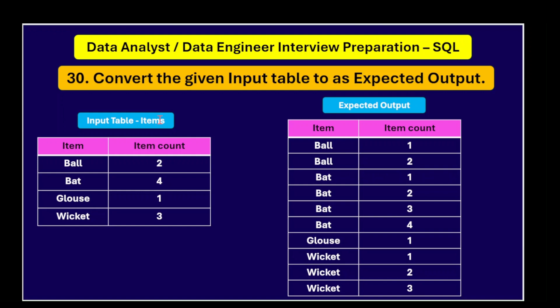In each item we have different types of items like ball, bag, gloves, and wickets. In the second column, this is a count of items — how many there are. Balls are two, bat are four, gloves are one, wickets are three. We need to convert this table into a format like ball one and ball two, then bat one, two, three, four. Like this we need to return.